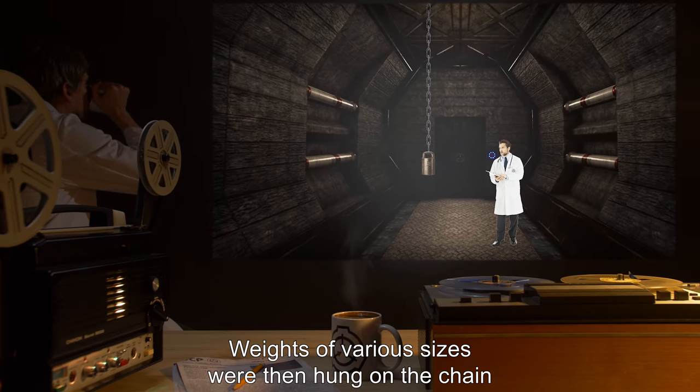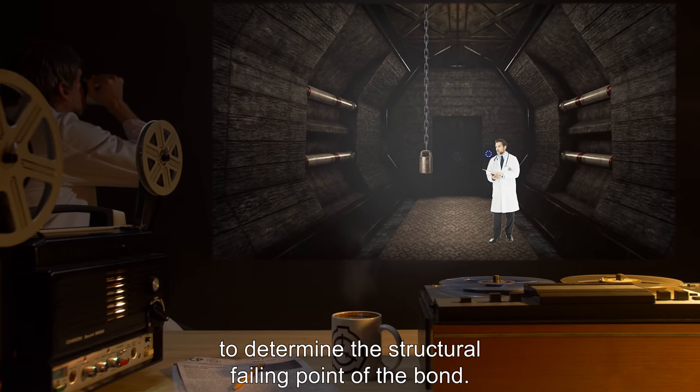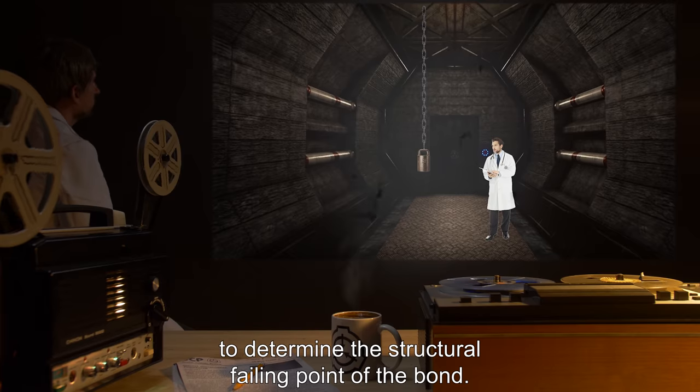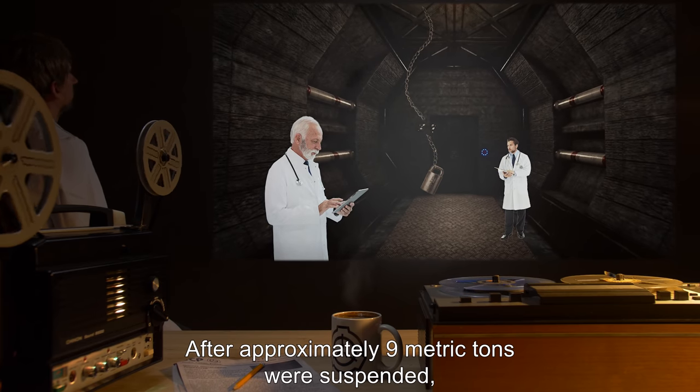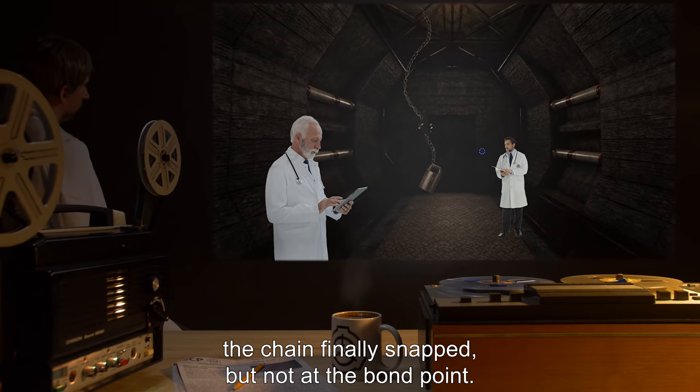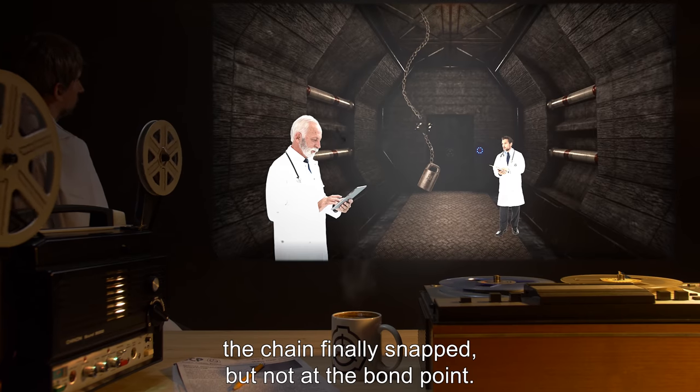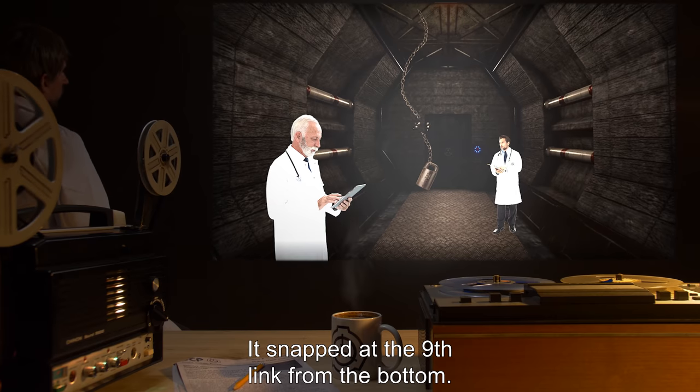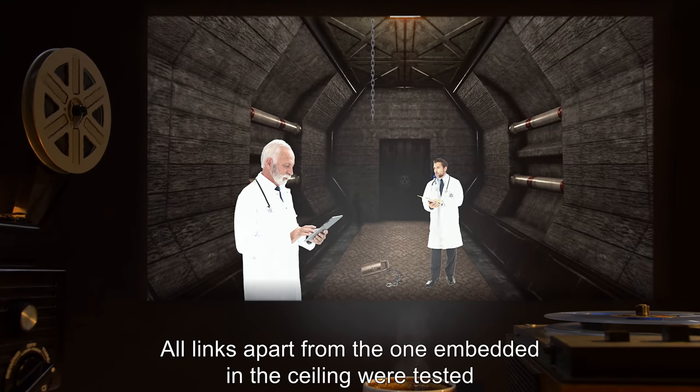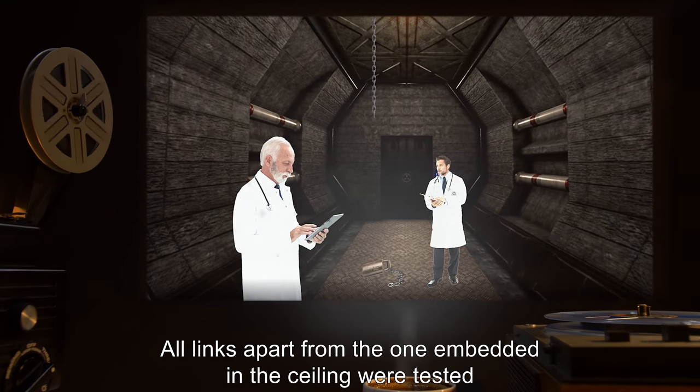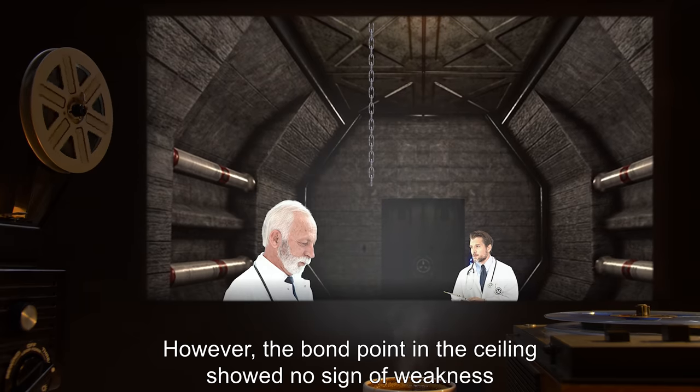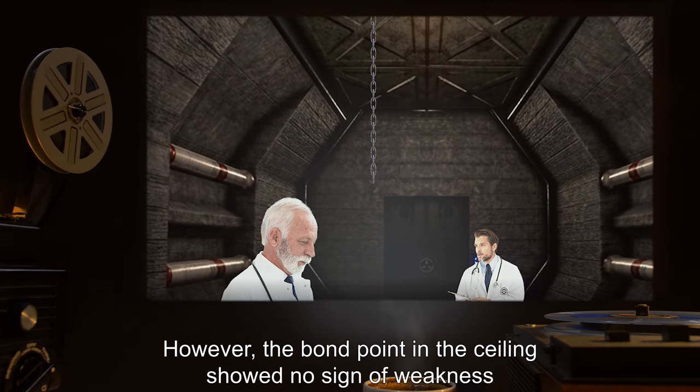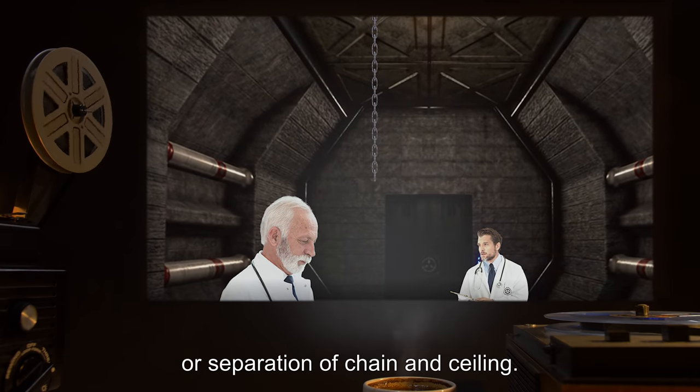Results: after approximately nine metric tons were suspended, the chain finally snapped, but not at the bond point. It snapped at the ninth link from the bottom. All links apart from the one embedded in the ceiling were tested and showed signs of distortion and stretching. However, the bond point in the ceiling showed no sign of weakness or separation of chain and ceiling.